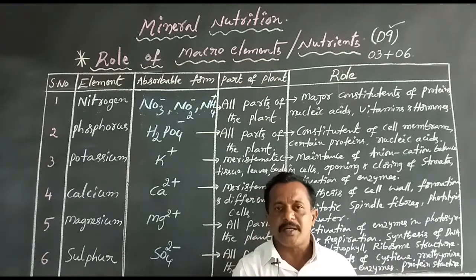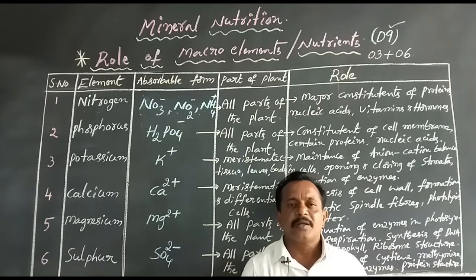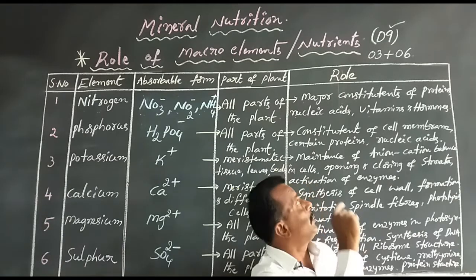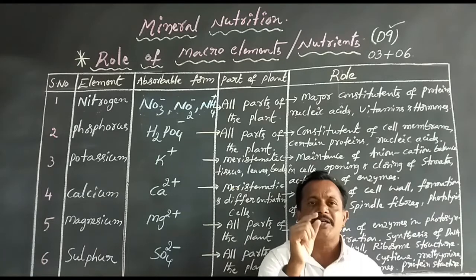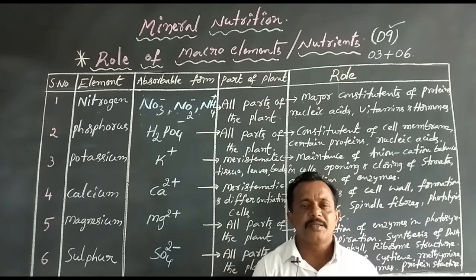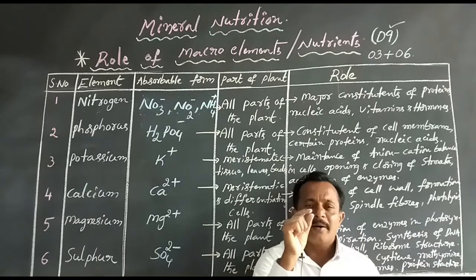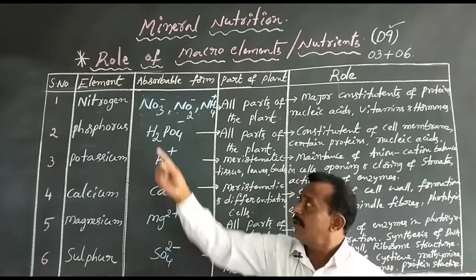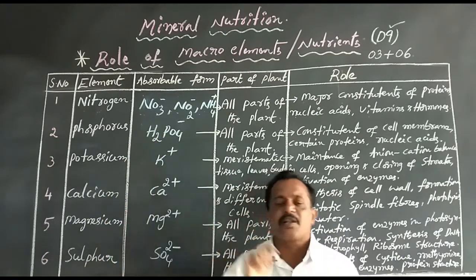There are 9 macro elements. Of these, 3 are non-mineral elements: carbon, hydrogen, and oxygen. The remaining 6 are mineral macronutrient elements: nitrogen, phosphorus, potassium, calcium, magnesium, and sulfur.